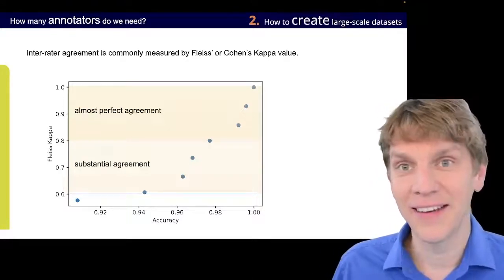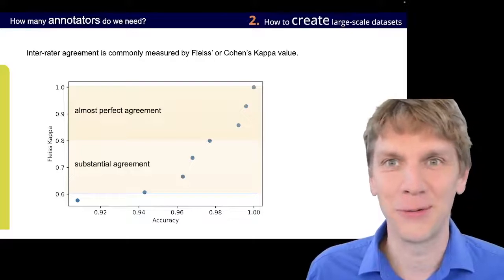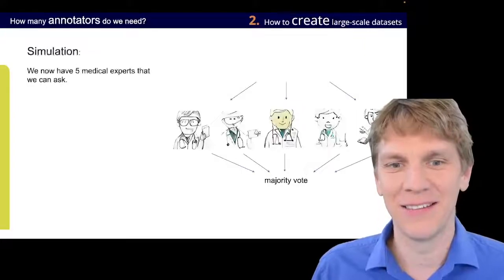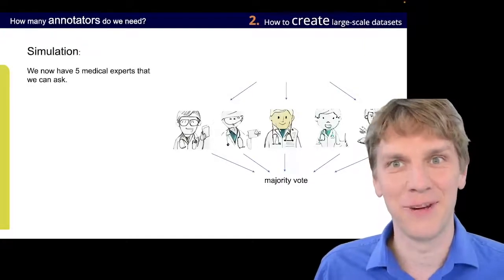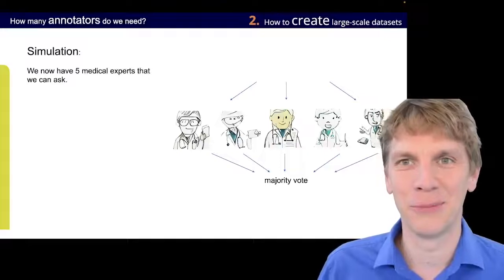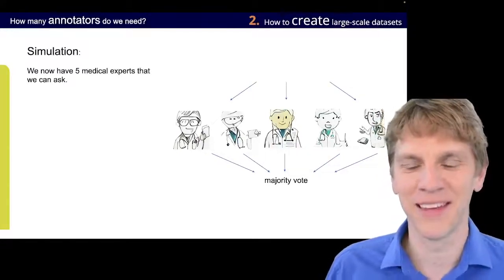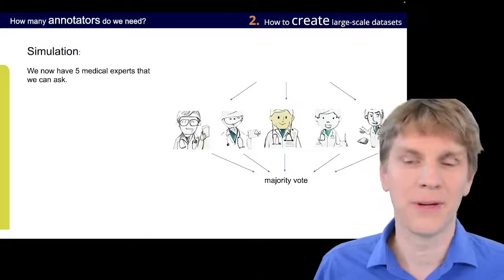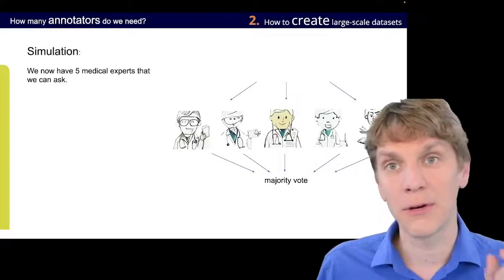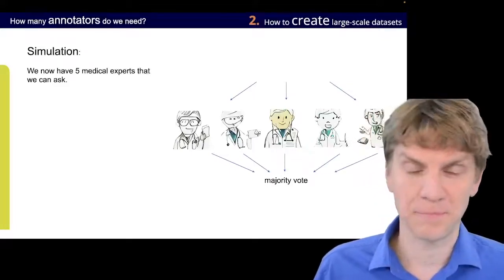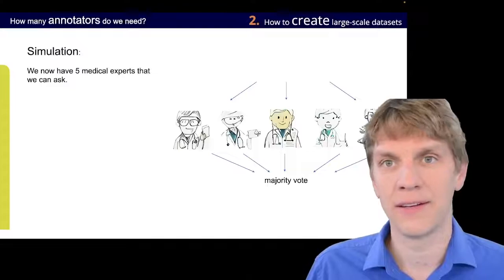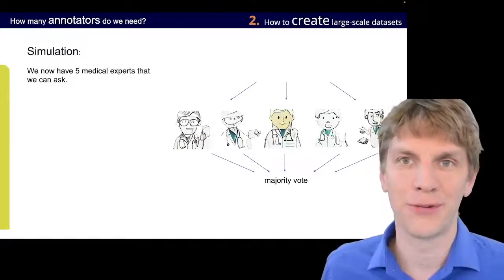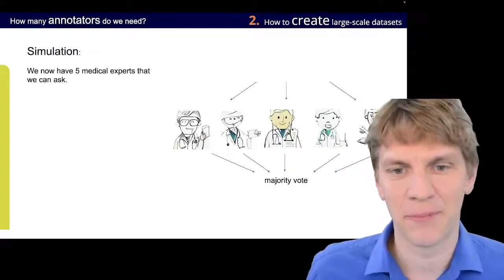Now, we can, in this ideal simulation world, also include more of the annotators, right? So, luckily, these simulated annotators are really affordable for us. They only consume, like, a couple of CPU cycles. And if we now do a majority vote of, let's say, not three, but five of them, we can see also the effect that this has. So, keeping constant the value of kappa, we can see how that relates to a different accuracy if we have a five-person majority vote.